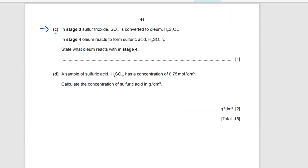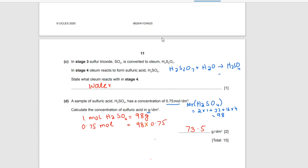Question c: in stage three, sulfur trioxide is converted to oleum (H₂S₂O₇). In stage four, oleum reacts to form sulfuric acid. State what oleum reacts with in stage four. Oleum reacts with water to make sulfuric acid. So the answer is water.